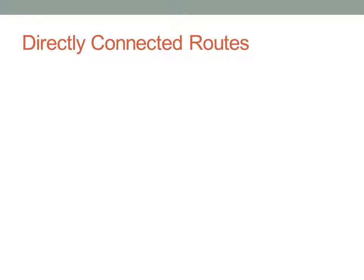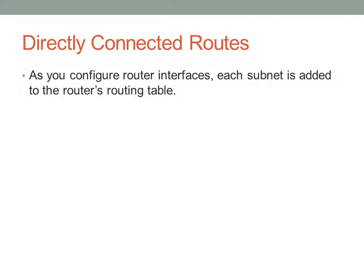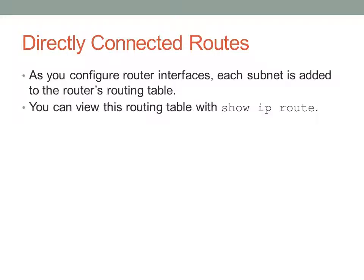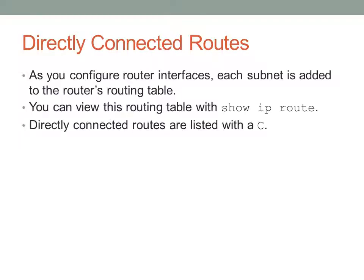The first type of route we're going to talk about are directly connected routes. These are the simplest type because as you configure your router interfaces and add IP addresses, each subnet that you configure is actually added to the router's routing table. It makes sense because routers obviously know about the networks they are directly connected to. You can actually view this routing table with the command show IP route. We're going to be using that command a lot in the coming weeks as we talk about different routing protocols. Directly connected routes are listed with a C in the far left column.